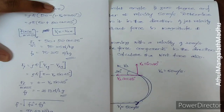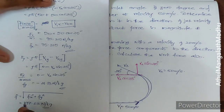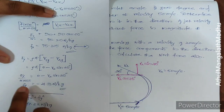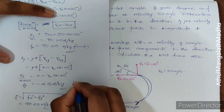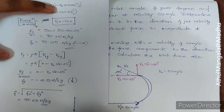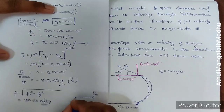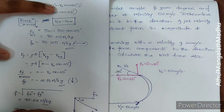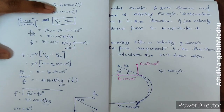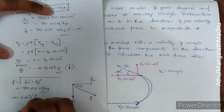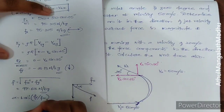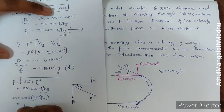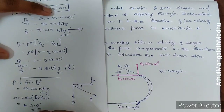To calculate the direction: fx is positive, acting in the x-direction, and fy is negative, acting downward. The resultant f has angle alpha given by tan⁻¹(fy/fx). Substituting the values, alpha = 12.5 degrees.